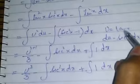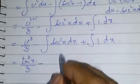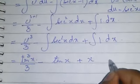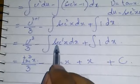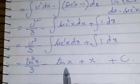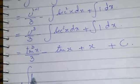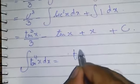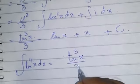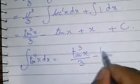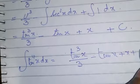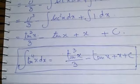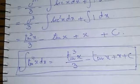Now I put back u is equal to tan x, so I got tan cube x over 3 minus tan x plus x plus c constant of integration. Therefore, integral of tan to the power 4x dx is equal to tan to the power 3x over 3 minus tan x plus x plus c.